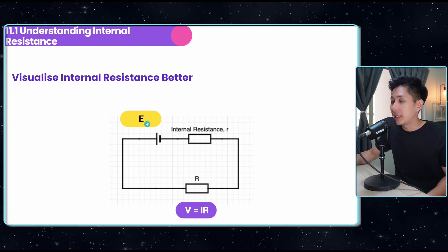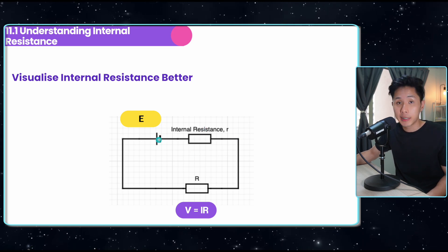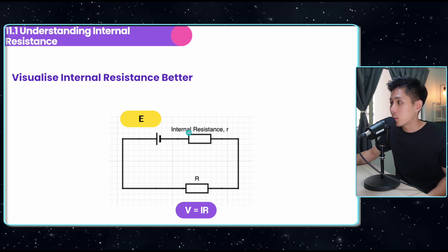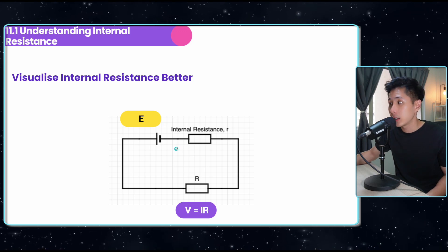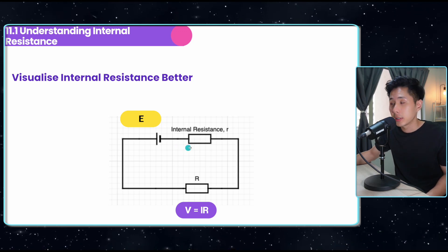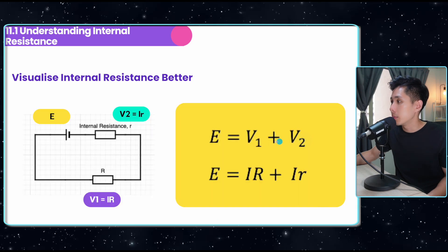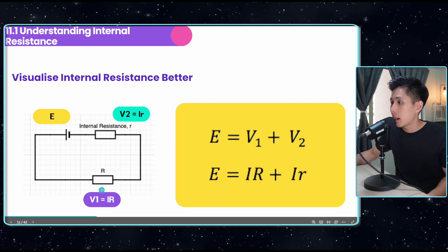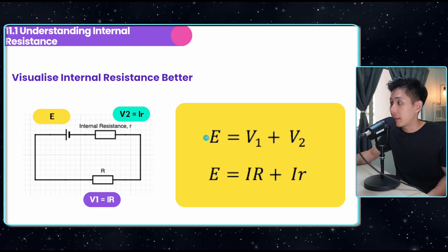What we didn't learn before is the concept of internal resistance, which is the resistance within the cell. To help you visualize better, I draw a resistor symbol here, but it's actually not there in the circuit. It's just there to help you calculate better. After putting internal resistance into account, the new formula should be: the voltage here plus the voltage across the power source equals the EMF.